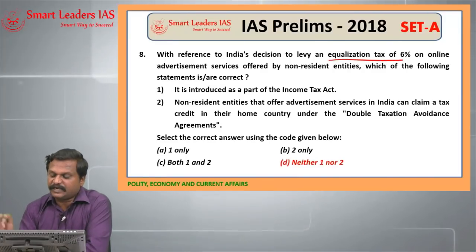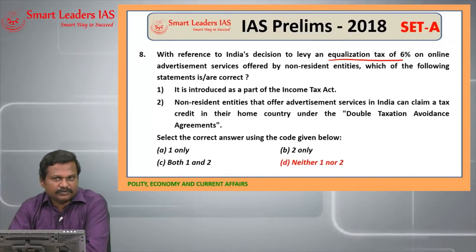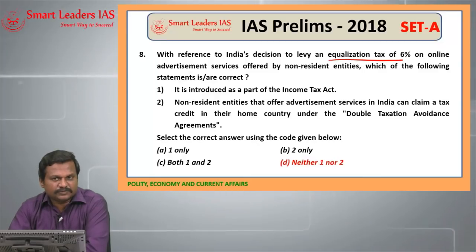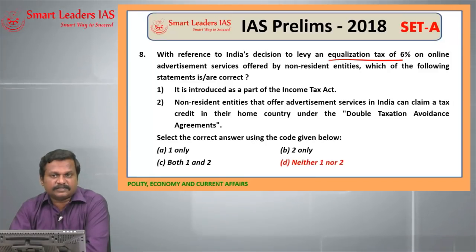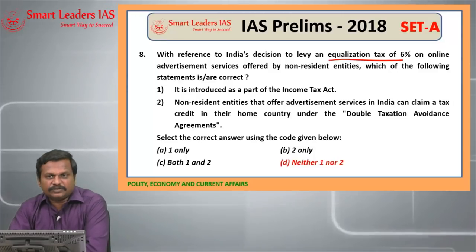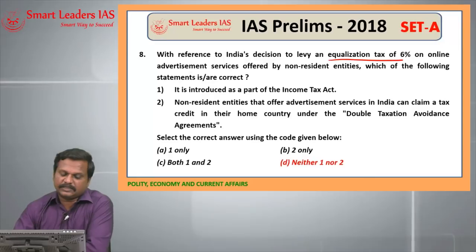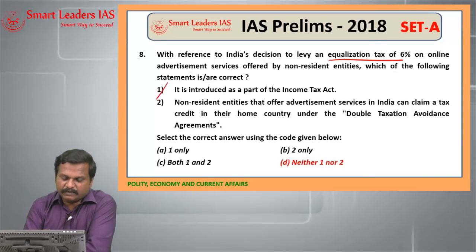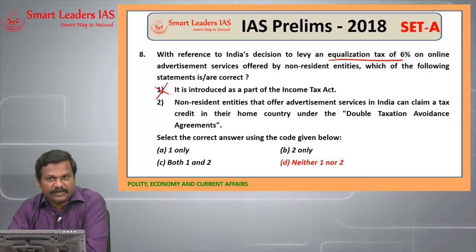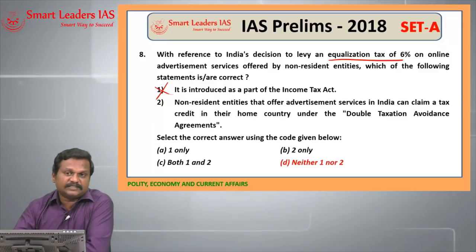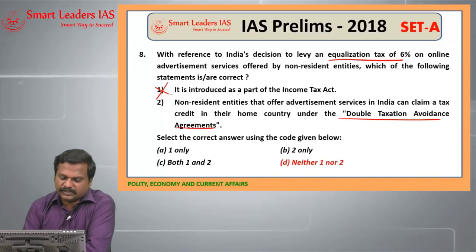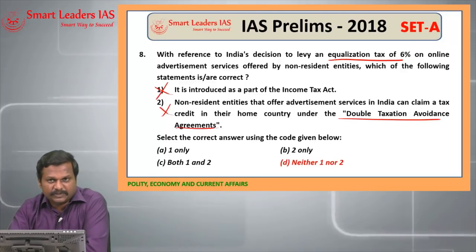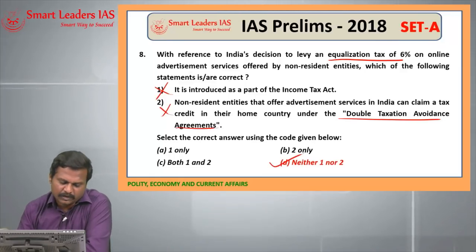Eighth question is on Equalization Tax. It was introduced in India in 2016, coming into force from June 1st 2016. It was introduced because of the OECD recommendation under its BEPS plan that there should be a tax imposed on digital goods and services by e-commerce firms. It was not introduced as part of the Income Tax Act but under Chapter 8 of the Finance Bill 2016. Since it is not calculated as income tax, it will not be eligible under the Double Taxation Avoidance Agreement. Both statements are wrong, so the answer is D — neither one nor two.